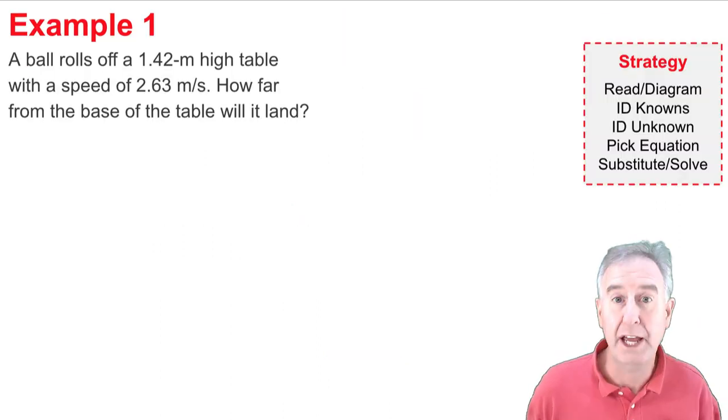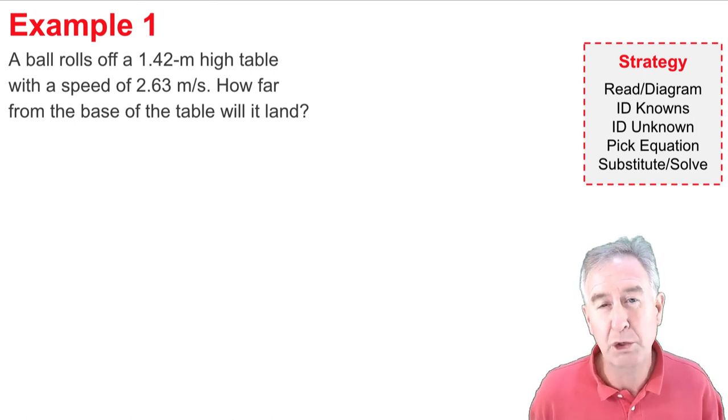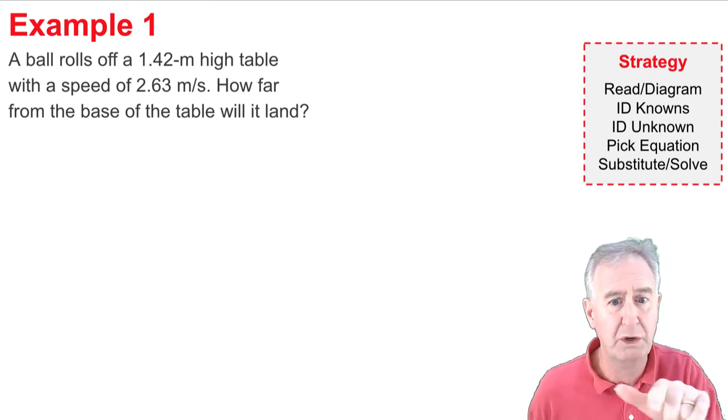Here's example one, and the first step of my strategy is to read and diagram. So a ball rolls off a 1.42 meter high table with a speed of 2.63 meters per second, it's rolling horizontally